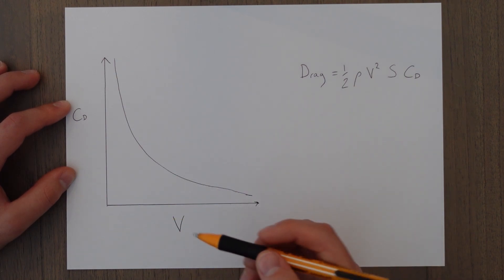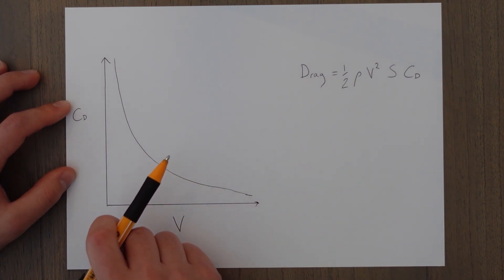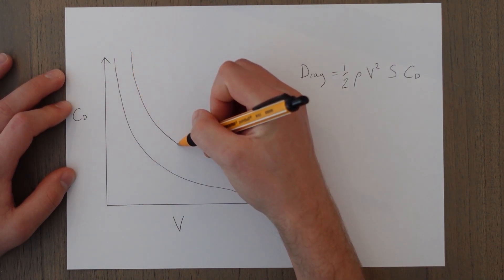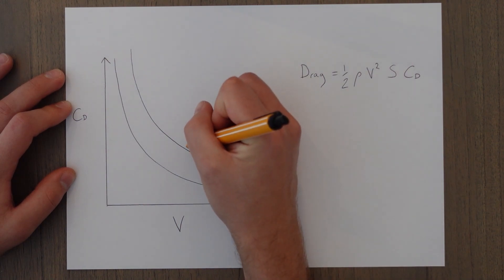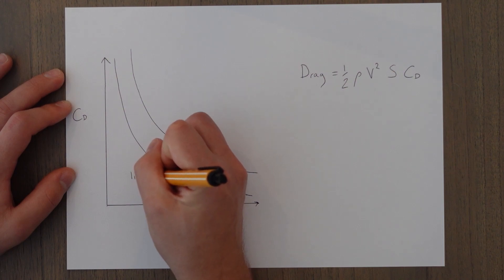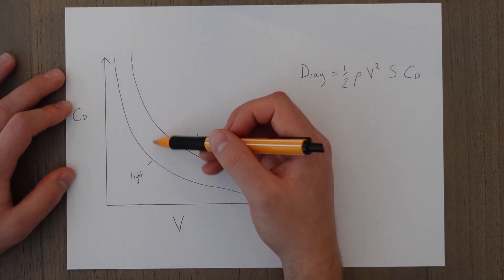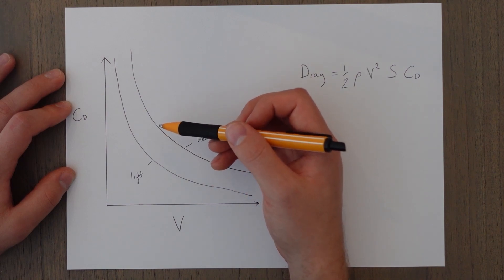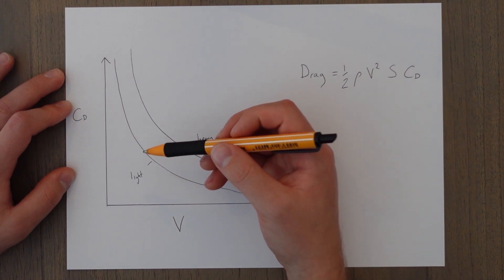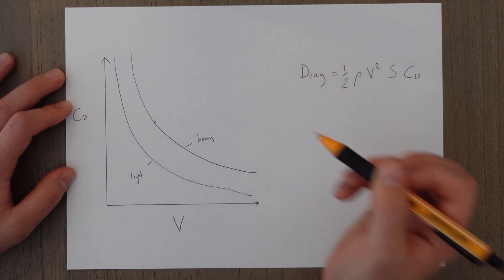A heavier aircraft will push the induced drag graph up and to the right. So as you can see, for a heavier aircraft you're always going to be producing more lift, and because you're producing more lift and more pressure differential, you will have a larger amount of induced drag at all points along the graph.